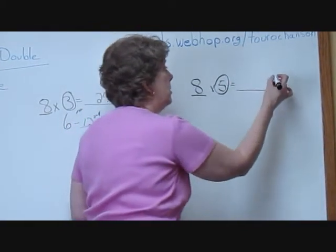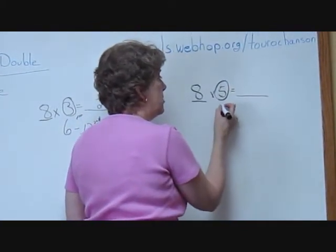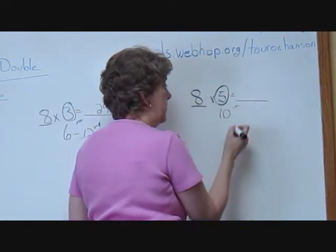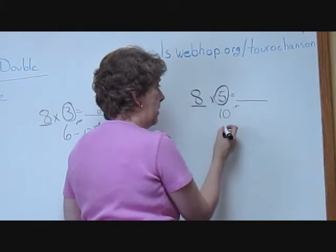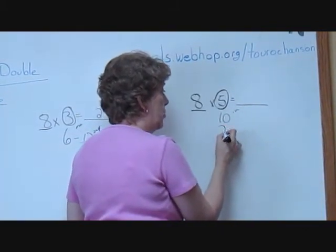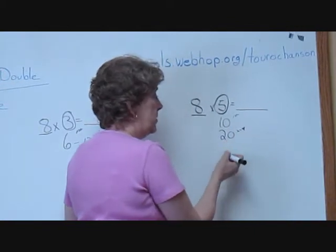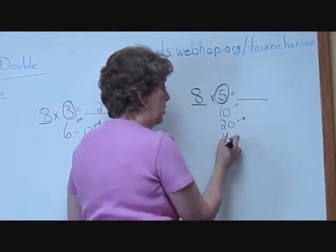I'm going to double it once, which is 10. That's the first time. I'm going to double it a second time, which is 20. And I'm going to double it a third time, which is 40.